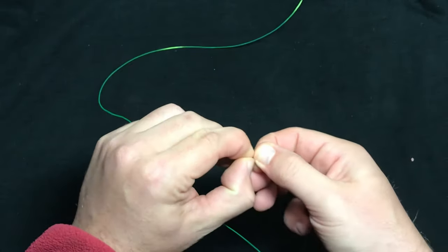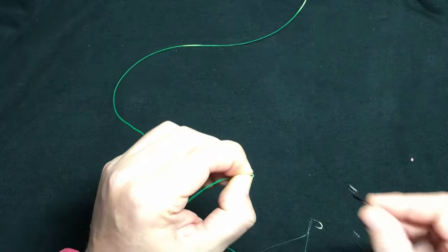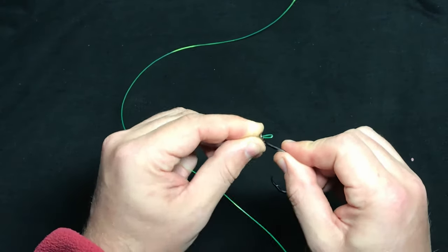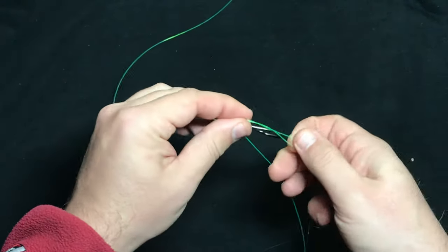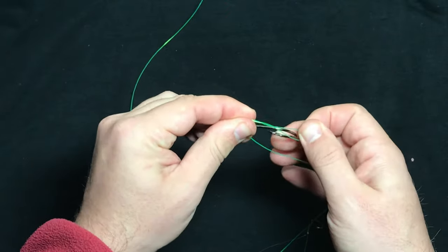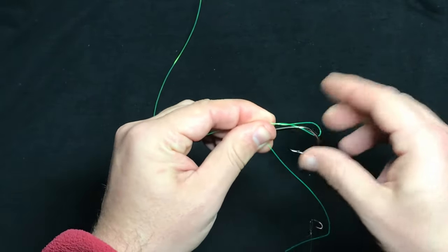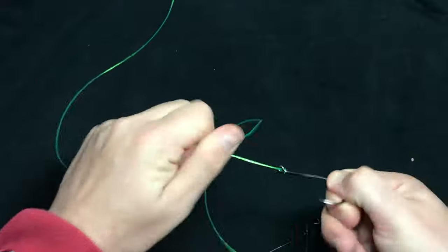So we're going to take that loop, pinch it, and thread it through the hook. Once you got it through the eye, I'm going to loop that around the hook bend and there you go.